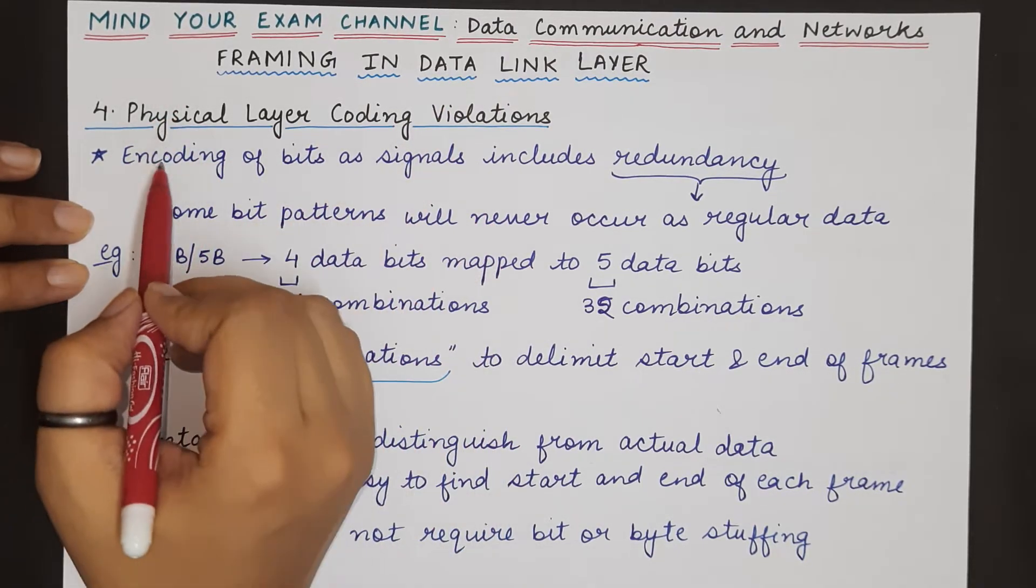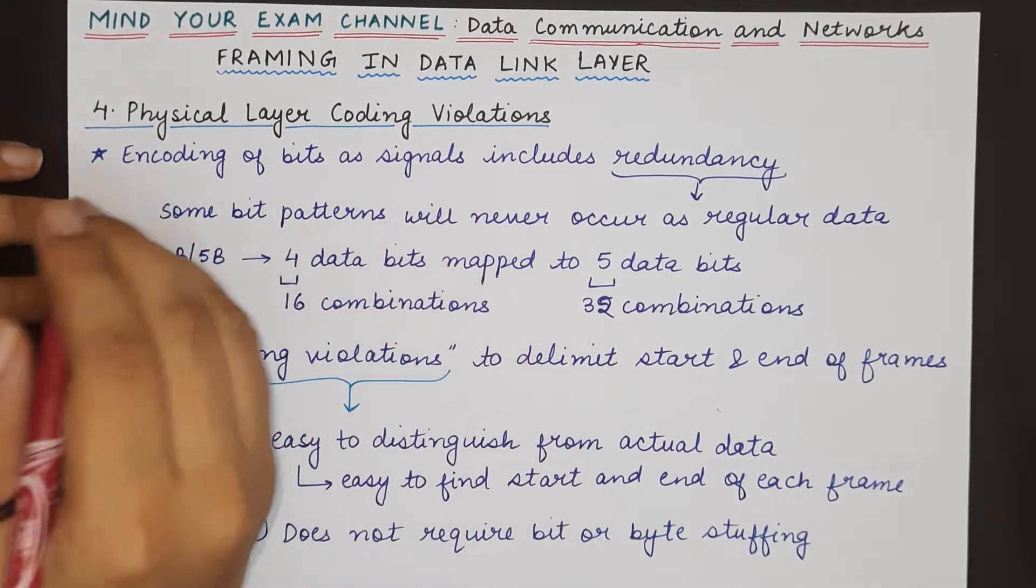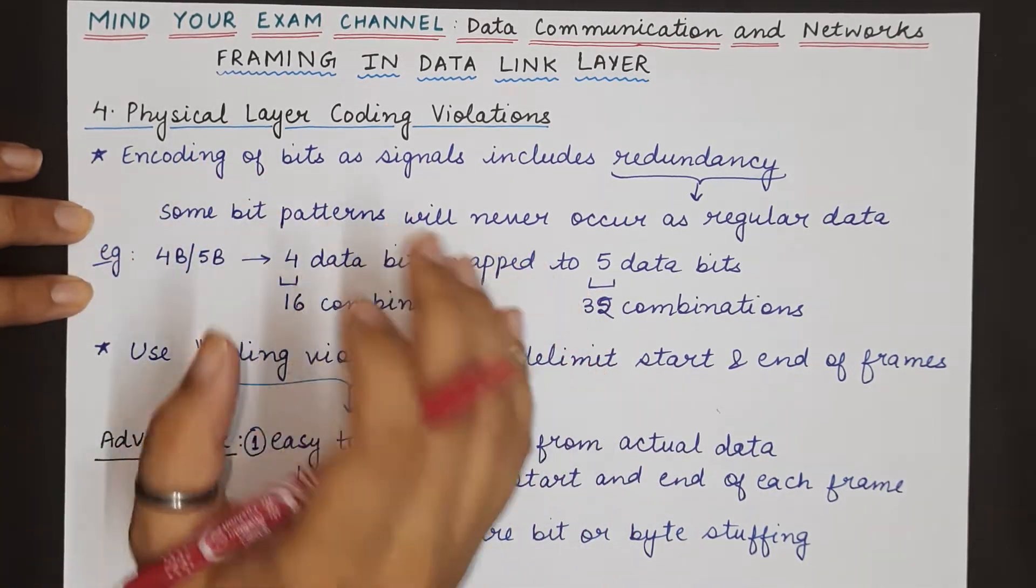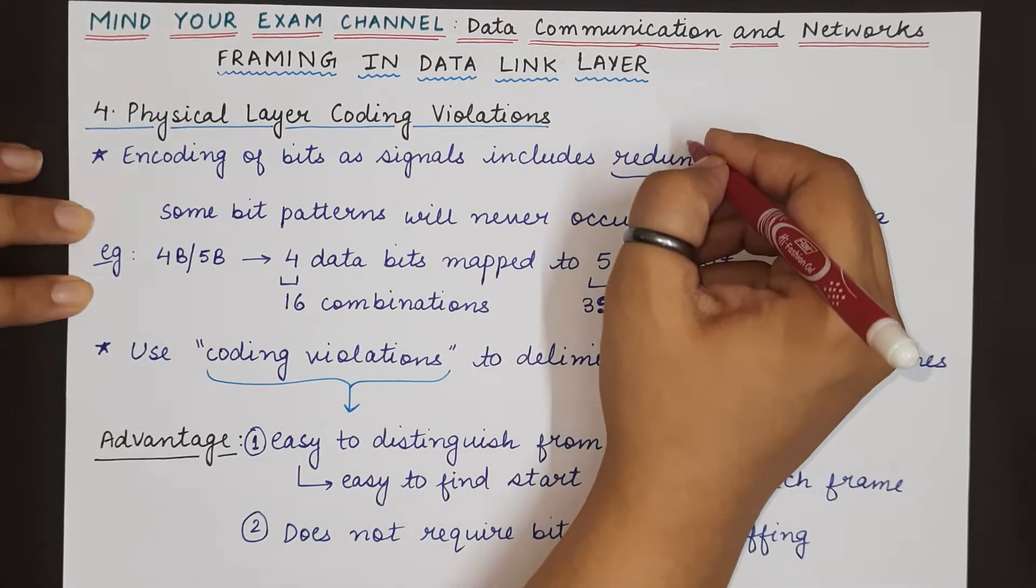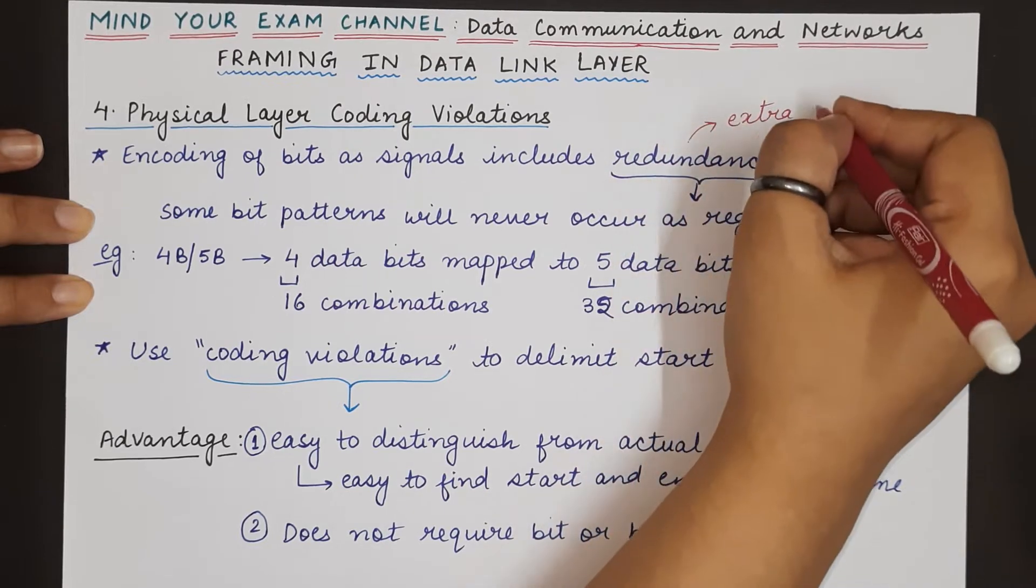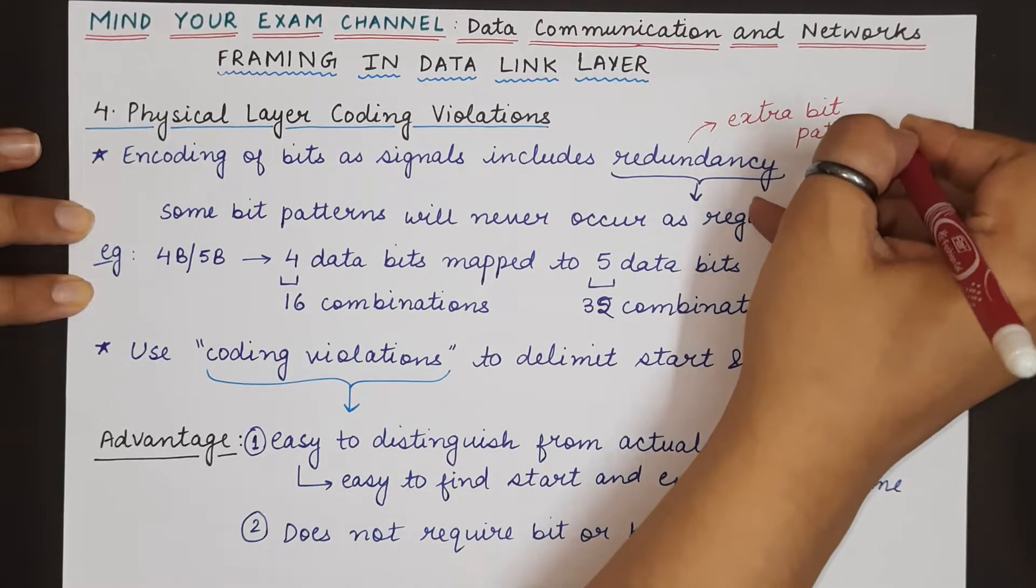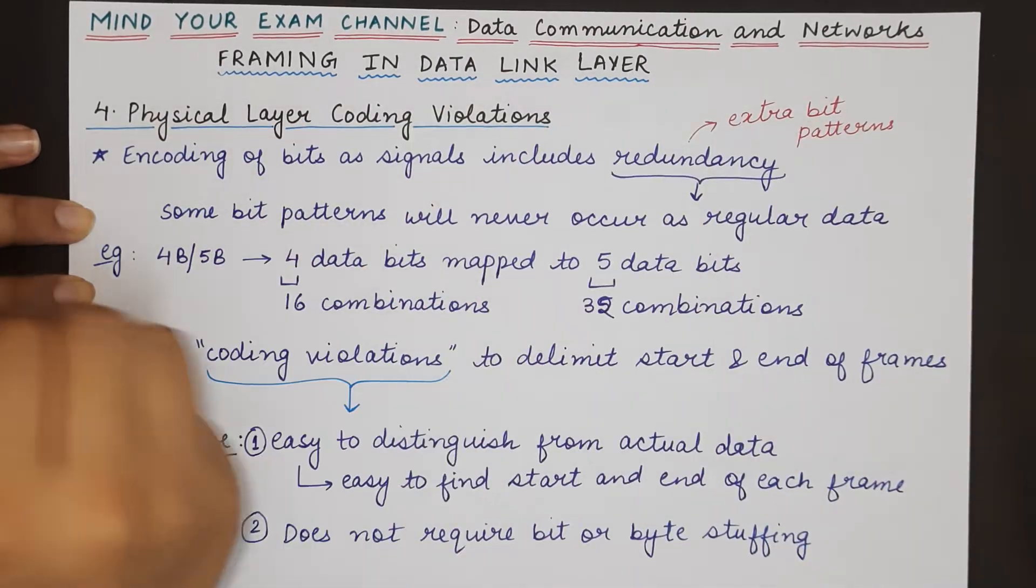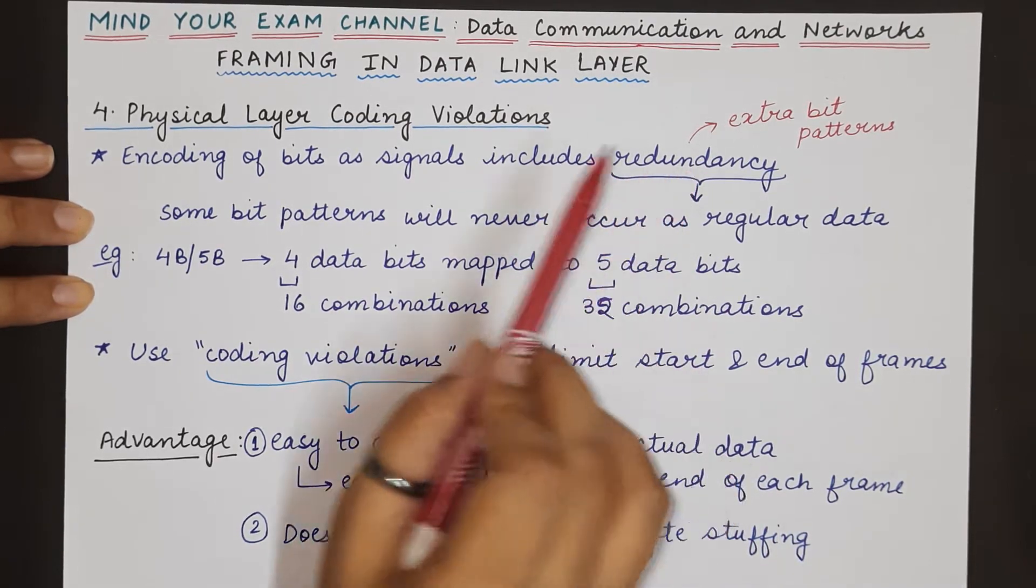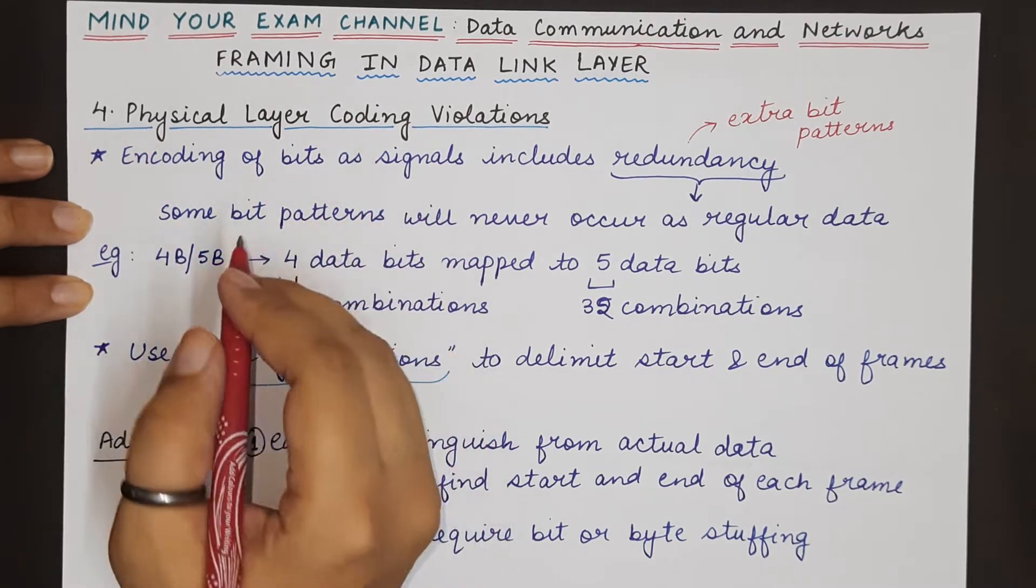We have studied during the physical layer that when we need to encode the bits, sometimes there are patterns that cannot be used to represent data in the bit stream that we are sending, and that is what results into redundancy. Redundancy basically means extra patterns or extra bit patterns that are present, that are available with us, and that cannot be used to send or represent data.